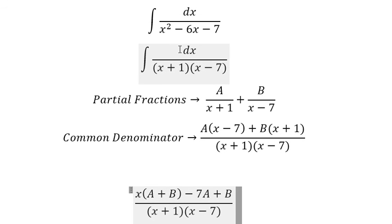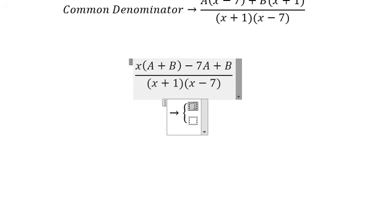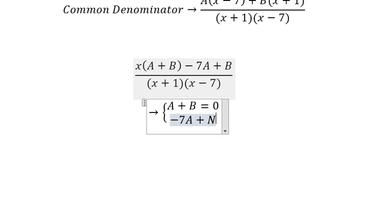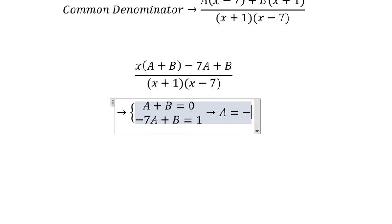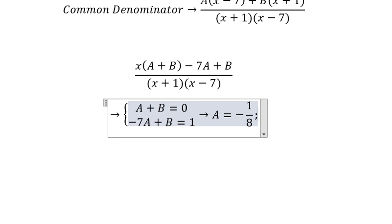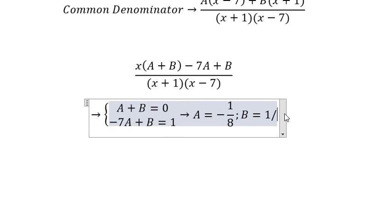For x, we don't have x in here, that means A plus B equals to zero. Negative seven A plus B equals to one. So we solve this equation in here, and we get A equals to negative one over eight, B equals to one over eight.